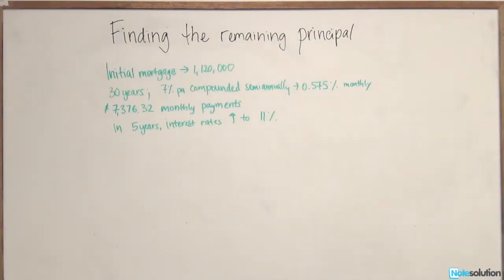Okay, so this is a difficult level question related to finding the remaining principal. We have a situation where Skype borrowed $1,120,000 as a mortgage to buy a cottage. The initial terms of the mortgage were 30 years, 7% per annum compounded semi-annually, and the effective monthly rate has already been given to us at 0.575%.